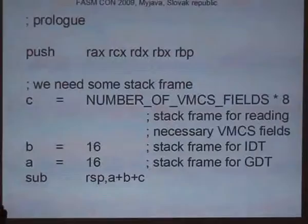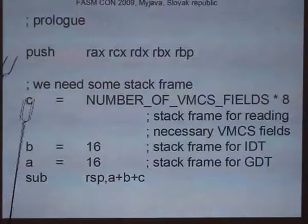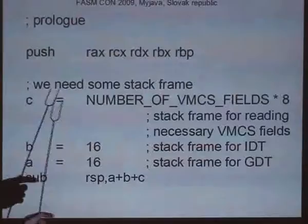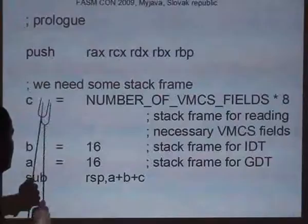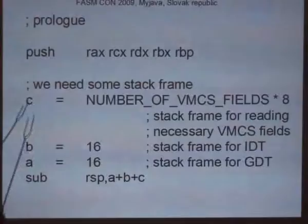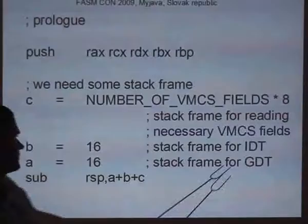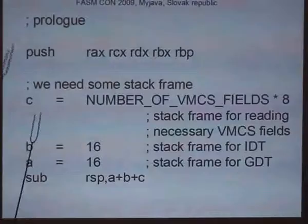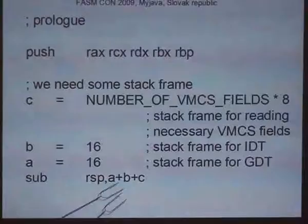The count of fields is calculated very simply by dividing the size. The prologue itself needs to push these five registers because we destroy them, and we also need stack space of five quad-words for the final instruction. The stack frame consists of all these fields, and the count of 10 is multiplied by 8 because they are quad-words. We need another 16 bytes for the internal descriptor table and 16 bytes for the global descriptor table. In fact we need only 10 bytes but we use 16 bytes because it will be aligned. So we subtract this whole stack frame from the stack pointer — this is the prologue: pushing registers.